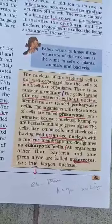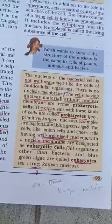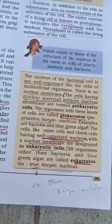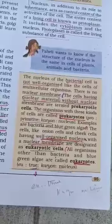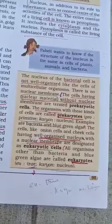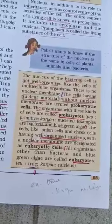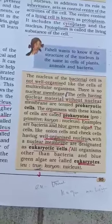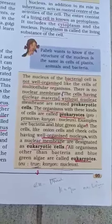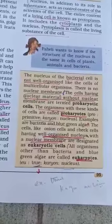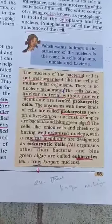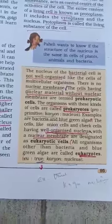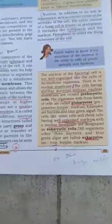Except for single-cell organisms like bacteria and blue-green algae, all multicellular organisms are called eukaryotes. The prefix 'eu' means true, and 'karyon' means nucleus — so eukaryotic cells have a true, well-organized nucleus.